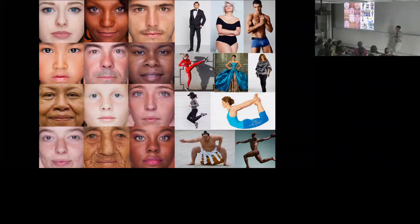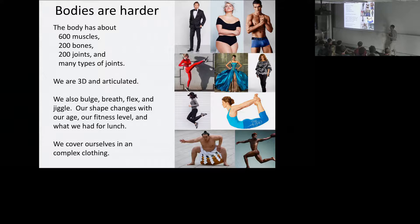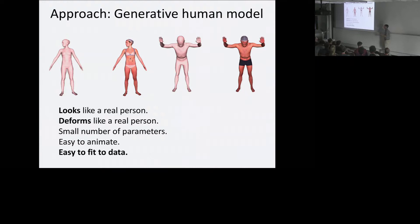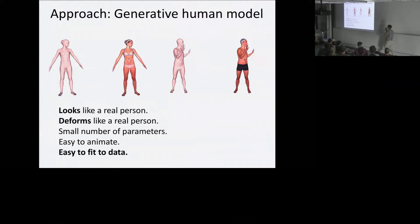The human body is much more complex. Your body has about 600 muscles, a couple hundred bones, and many joints of different types. Body shape changes throughout your life, throughout the day, and even from before to after lunch. We also cover ourselves in clothing that obscures our shape, making this a much more challenging computer vision problem.